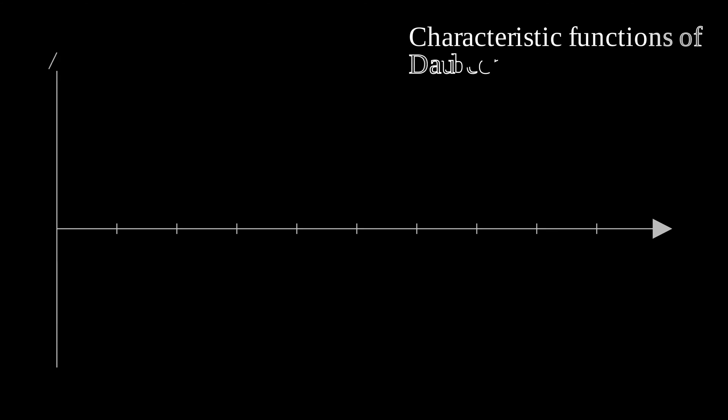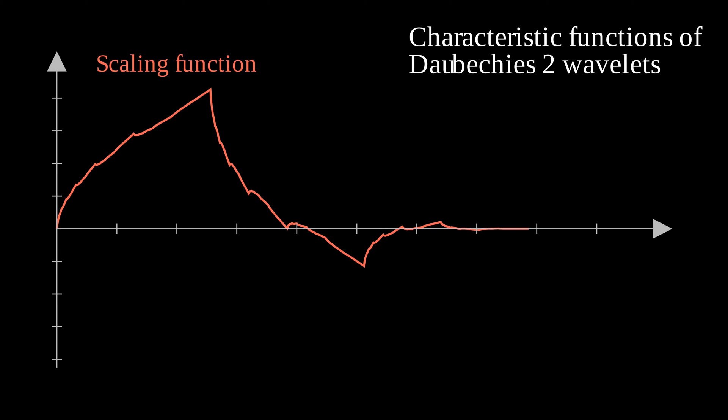One famous wavelet family is the Daubechies wavelets. Here you can visualize the scaling function and the wavelet function of the Daubechies 2 wavelets. These are quite more complex than the Haar ones, aren't they? But the idea is the same. The scaling function is used to visualize the approximation space and the wavelet functions for the detailed spaces.